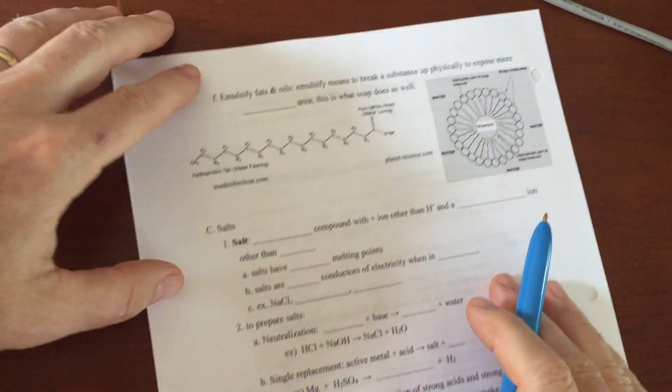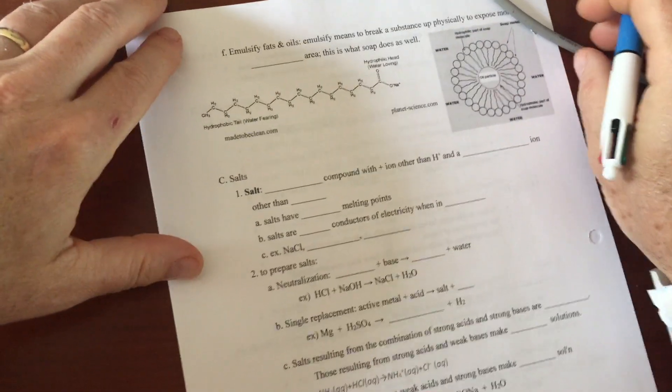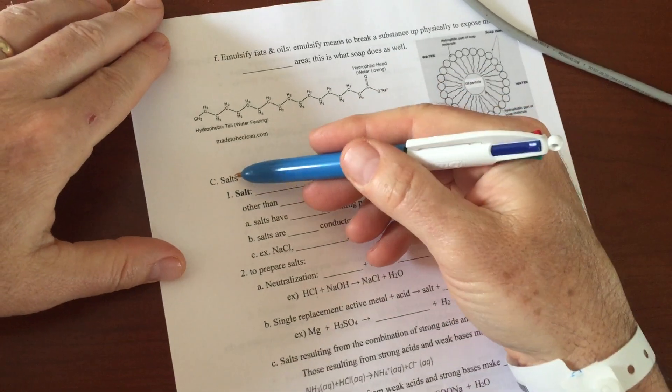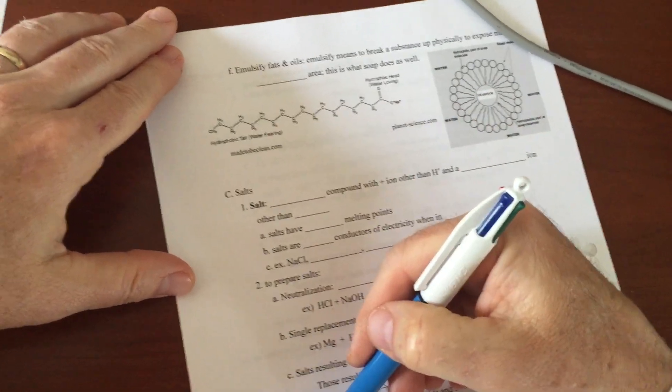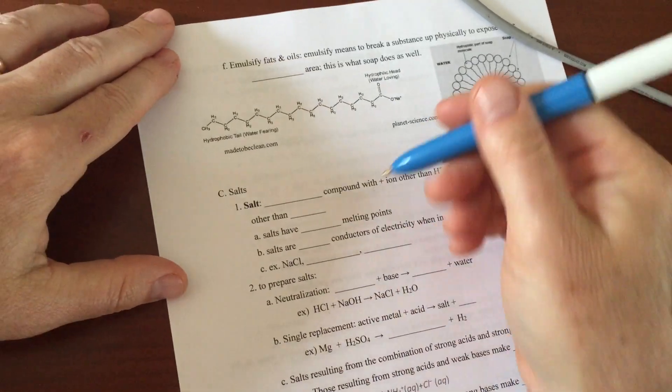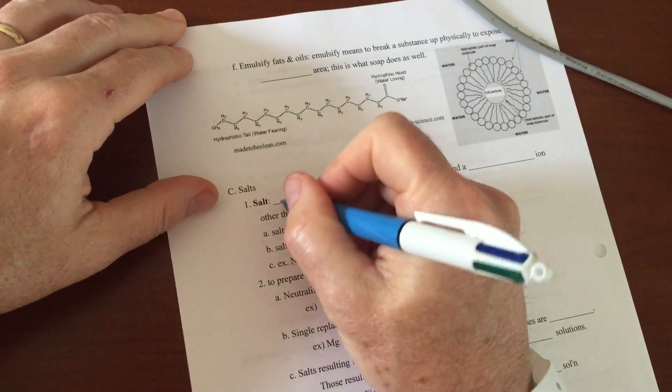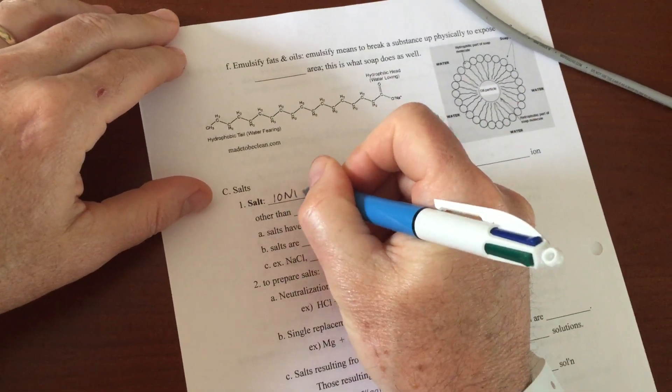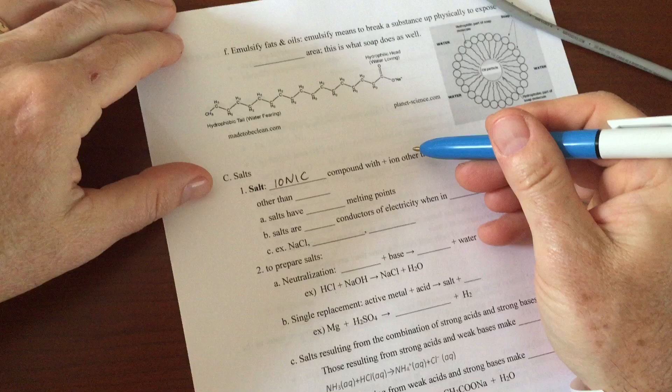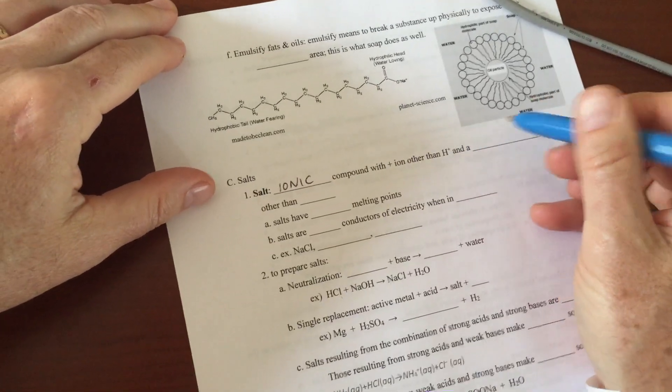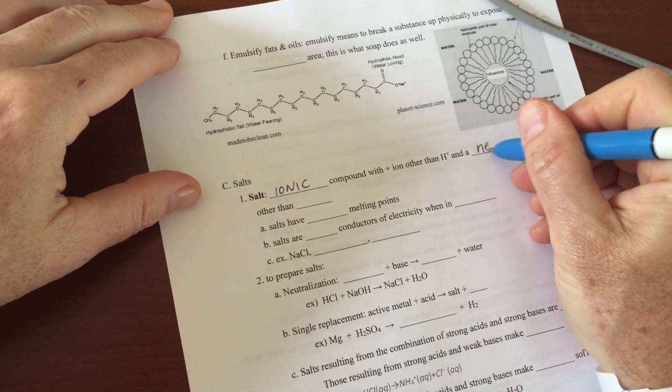Hi, this video is only going to take about five minutes. We're going to get the notes for salts for today. So salt is an ionic compound with a positive ion other than hydrogen and a negative ion other than hydroxide.